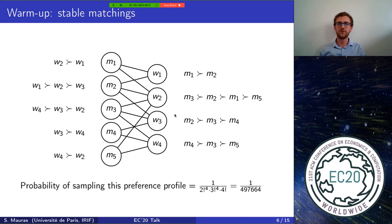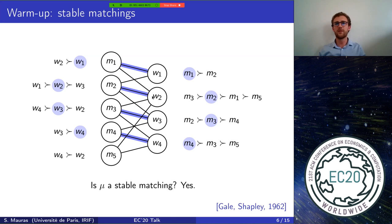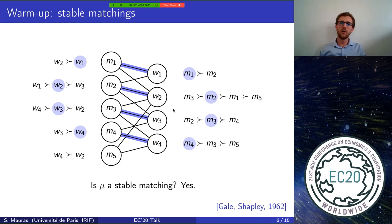Given a preference list, we define stable matchings. A stable matching mu is a matching with no blocking pair — a classical definition from Gale and Shapley. A blocking pair is a pair where both agents, say m1 and w2, like each other and would prefer to be together rather than with their actual partners. In this example, m1 and w2 are not a blocking pair because w2 is happy with m2 and prefers m2 to m1. Gale and Shapley proved there is always at least one stable matching and gave a procedure to compute it: deferred acceptance.